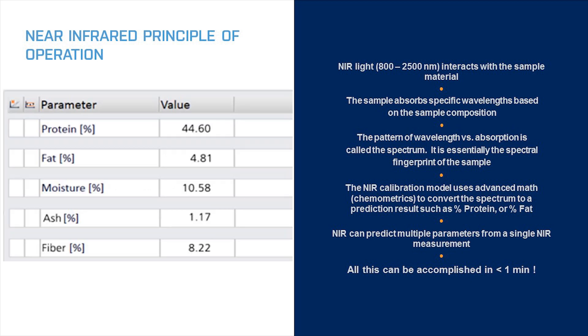One of the valuable aspects of near-infrared is that you can get multiple parameters in a single NIR scan. So in this example we have five parameters: protein, fat, moisture, ash, and fiber, and we're expressing a value in terms of percent concentration for each of those values. And this is all generated from a single scan that can be accomplished in less than a minute.